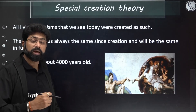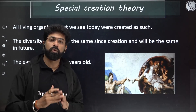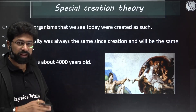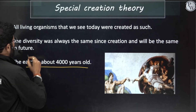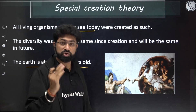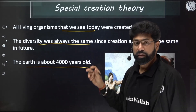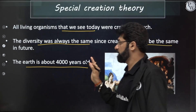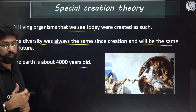The Theory of Special Creation has three propositions: first, the earth is only about four thousand years old; second, all living organisms we see today were created as such — there is no chain among them; and third, the diversity was always the same, has not changed, and will remain the same in the future. These were the three propositions given by the special creation theory proponents.